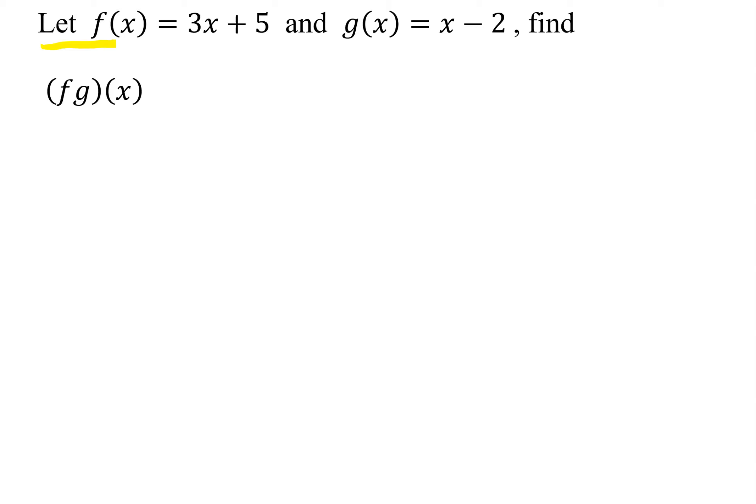In this problem, we're given two functions, f of x equals 3x plus 5, and g of x equals x minus 2, and we're asked to find the product function f times g of x.